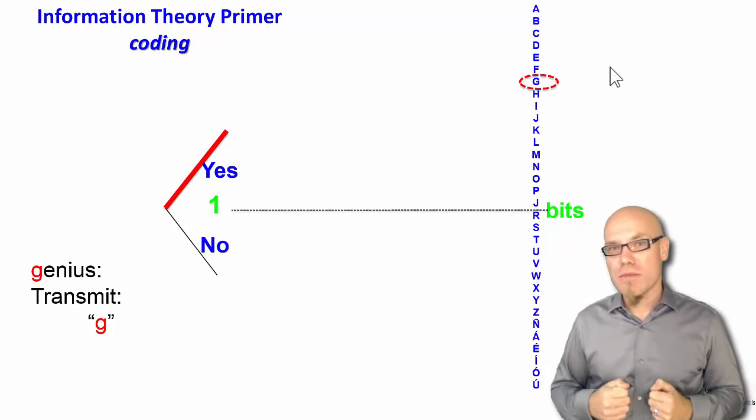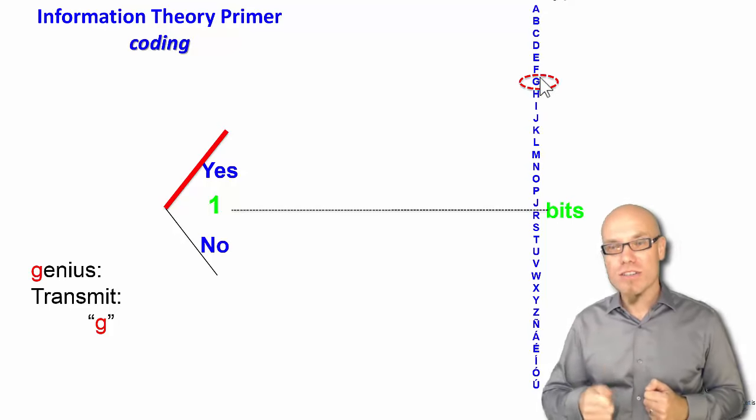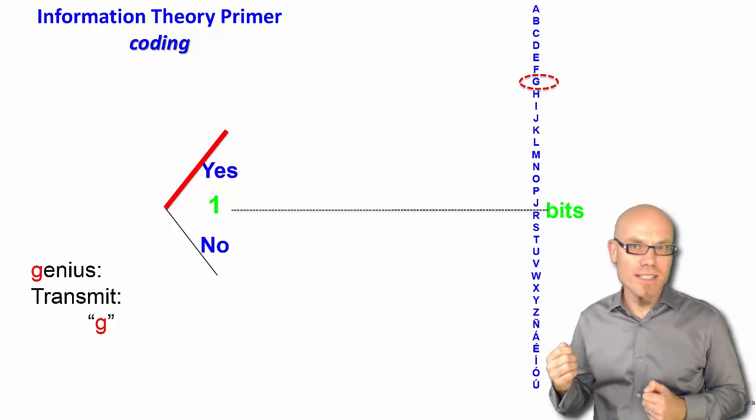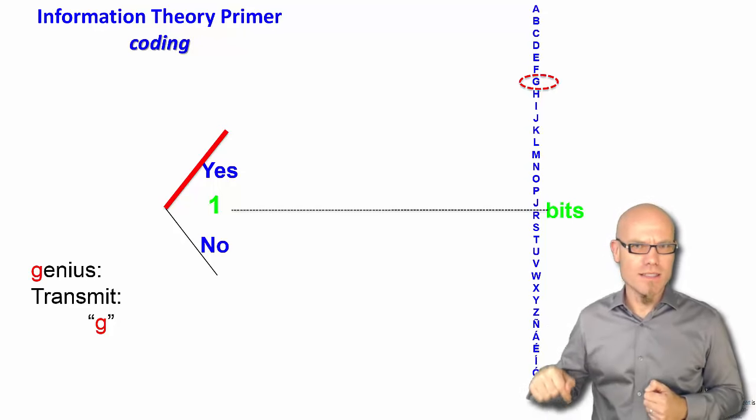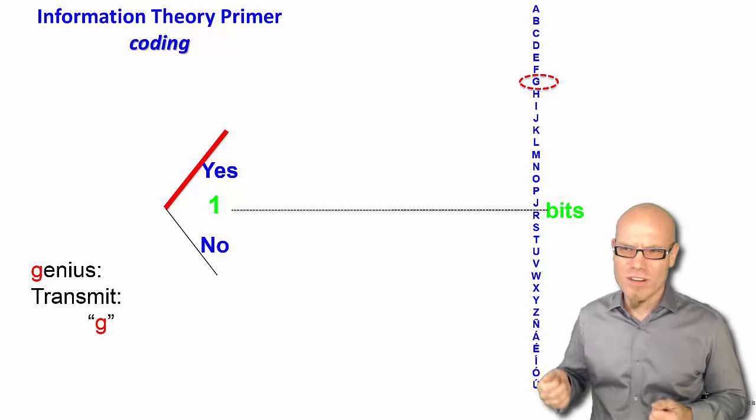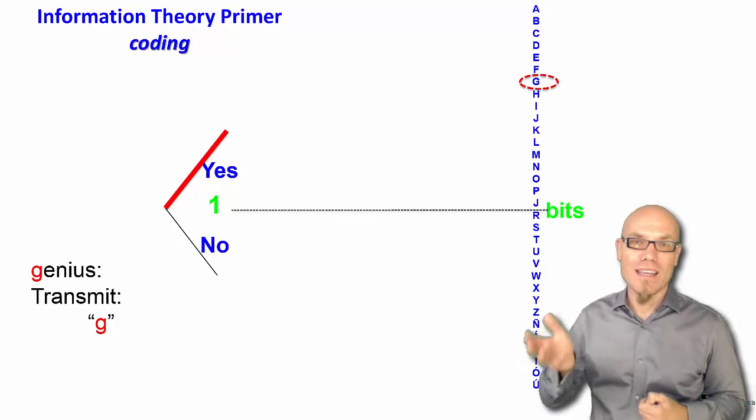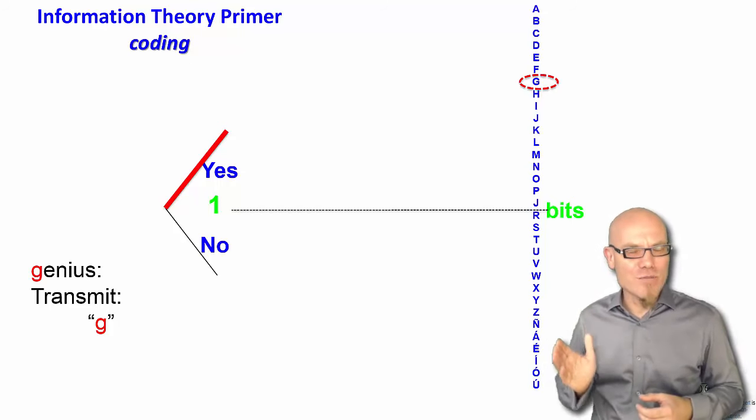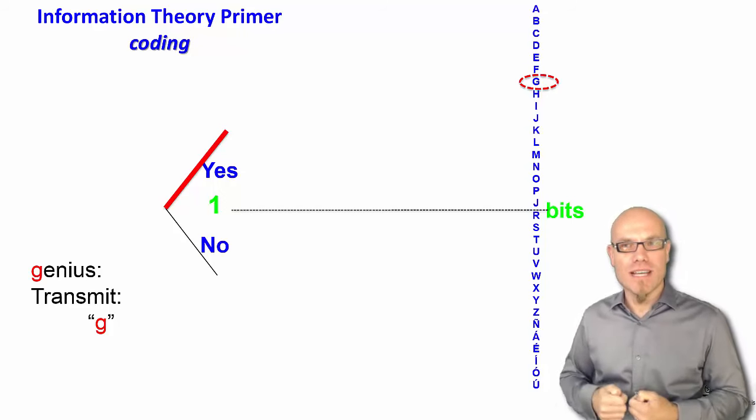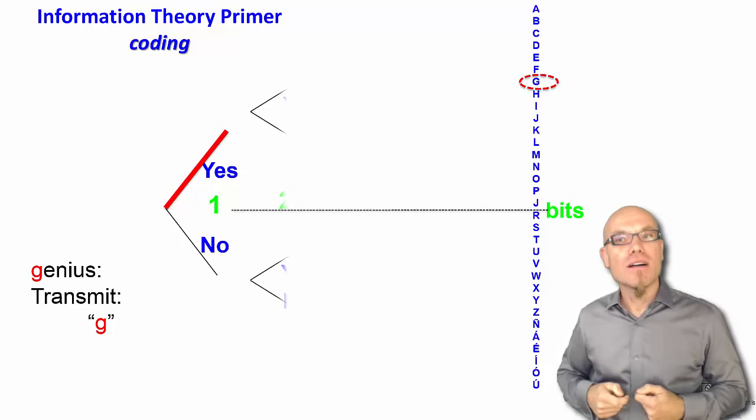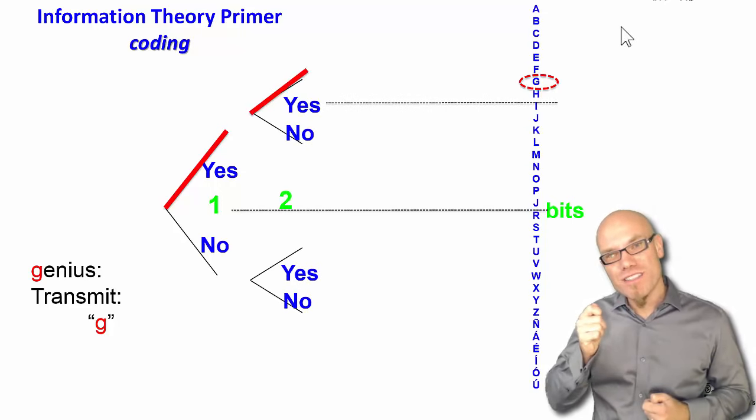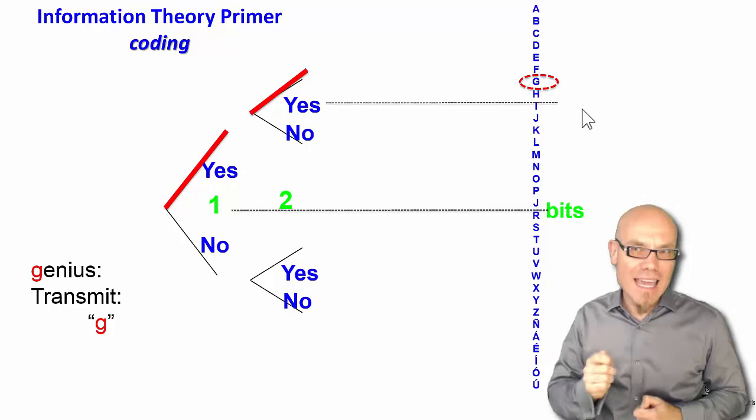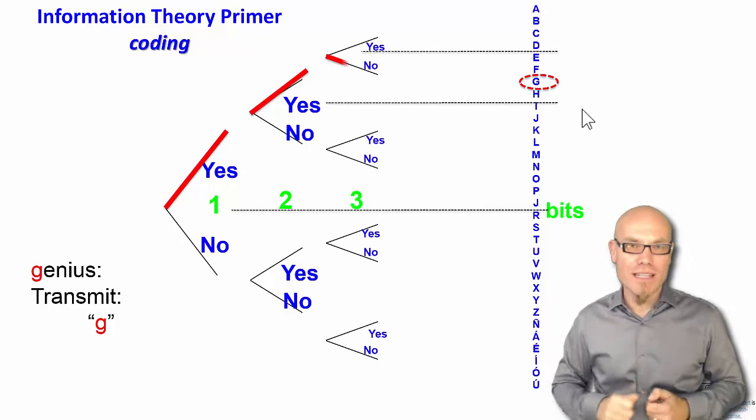So you ask, is the letter in the first half, in the first 16 letters, or in the second 16 letters of the alphabet? The bit, the binary choice, can tell you 1 it's in the first half or 0 it's in the second half. 1 or 0 is just the choice. It could also be up and down or black and white or elephant and 52. It doesn't matter. It always has to be a binary choice. That's where the bit comes from. Okay, so we say it's in the first half. Then secondly, is it in the first eight letters of the 16 or the second eight letters? So we go down from 32, 16, 8. Then we check the next 4, 2, 1. And then we identified the G.